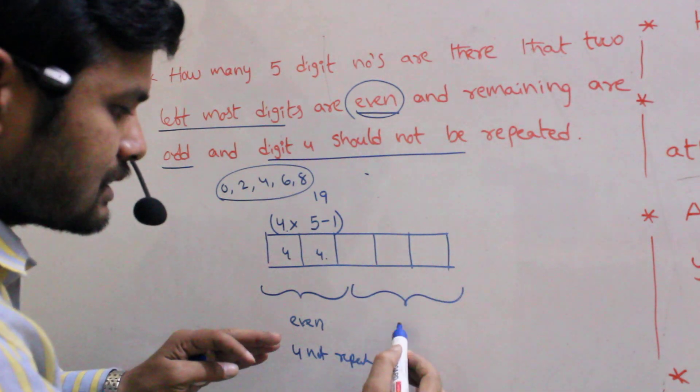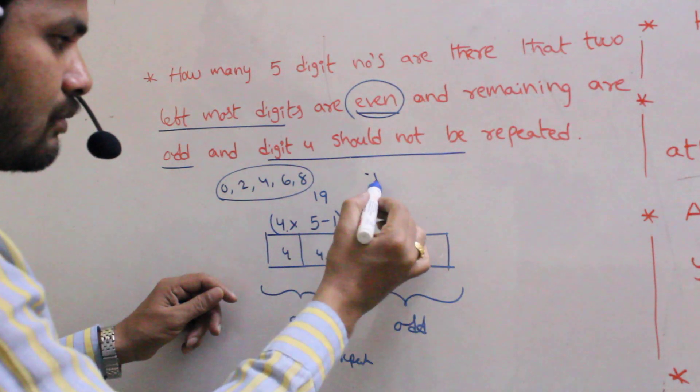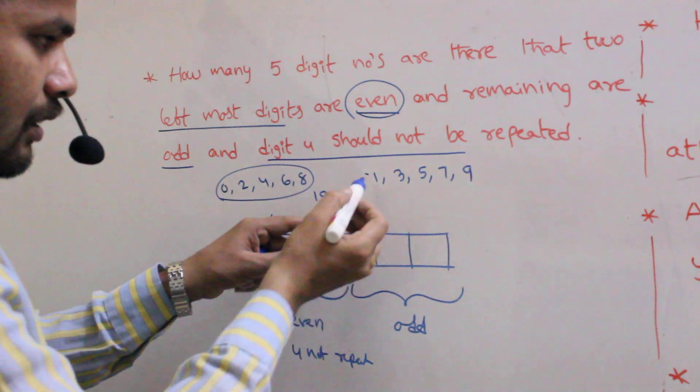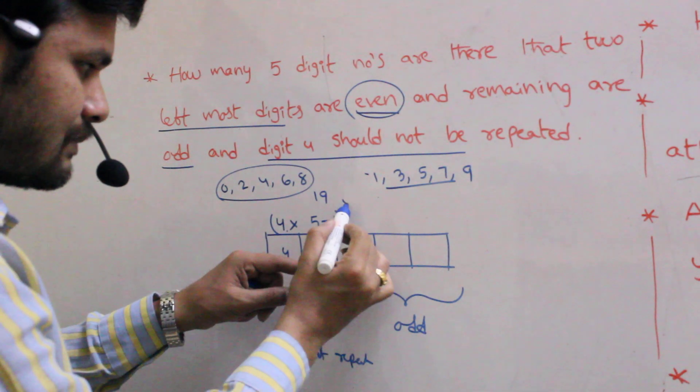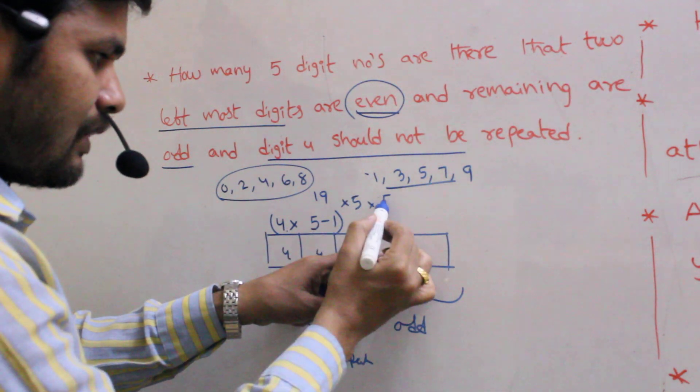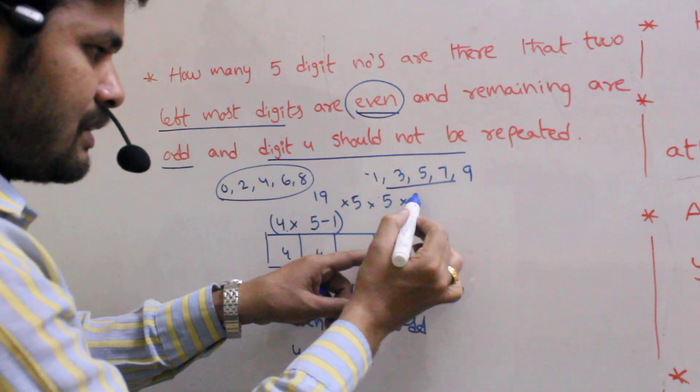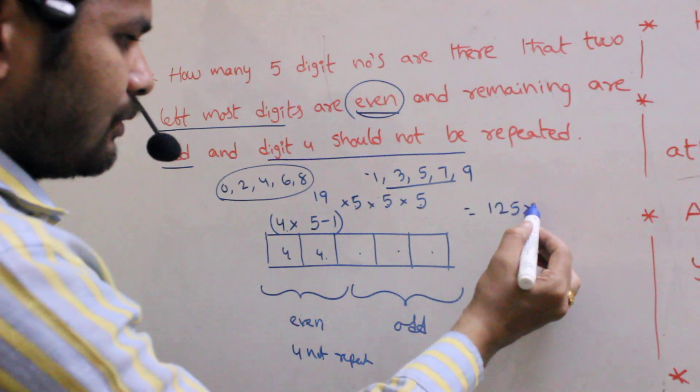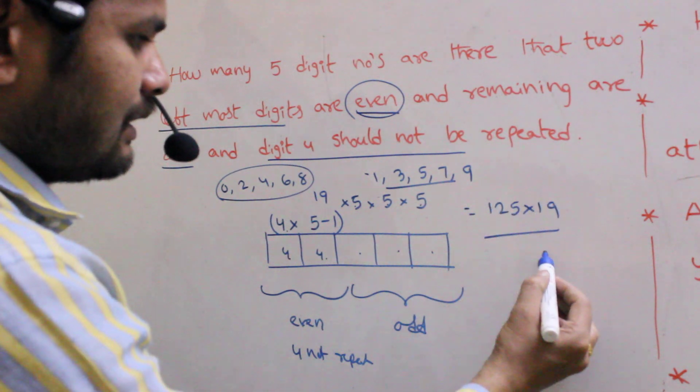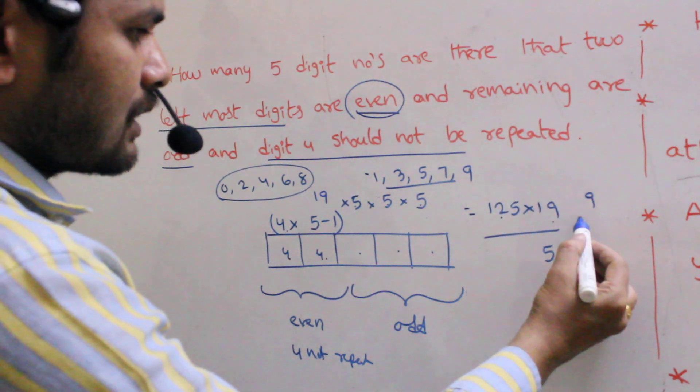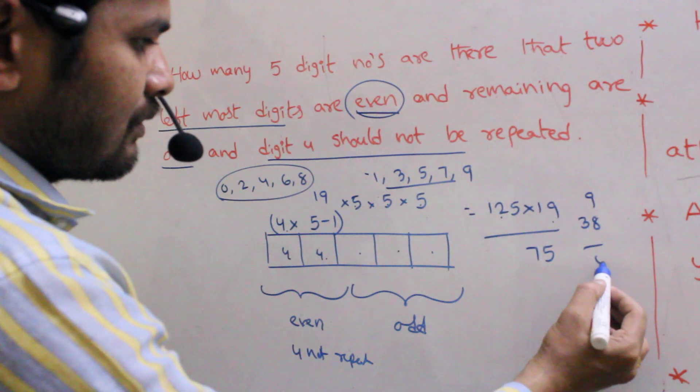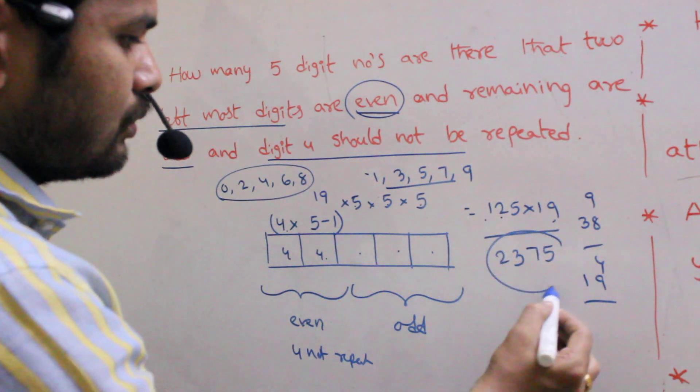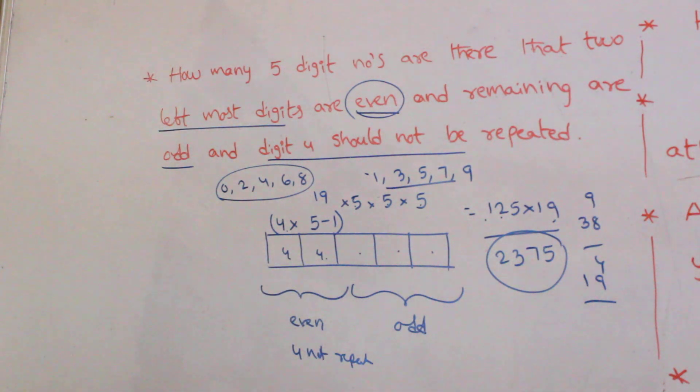Next, the remaining digits are odd numbers. What are the odd numbers? 1, 3, 5, 7, 9. But how many chances will be there? 5 chances. Next one, how many chances? 5 chances. This is also how many chances? 5 chances. 5 into 5 into 5, 1, 25 into 19. 19, 5's are 95. 19, 2's are 38. 38, 9, 47, 4. 19, 1's are 19. 19 plus 4, 23. 2, 375 chances will be there.